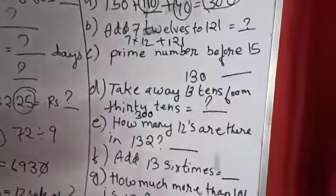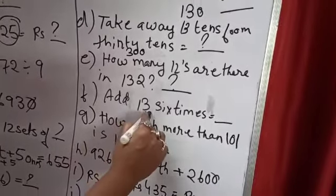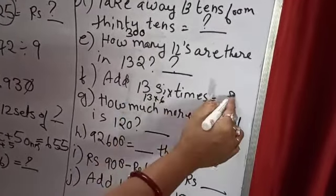How many 12s are there in 132? So 12 what's are 132? I will not tell you. You do it. Add 13 six times, means 13 into 6. Whatever the answer, write it over here.